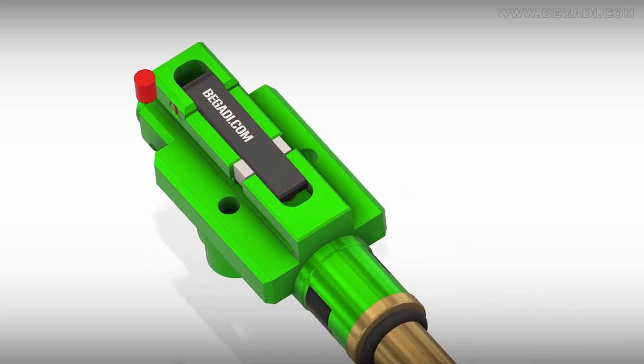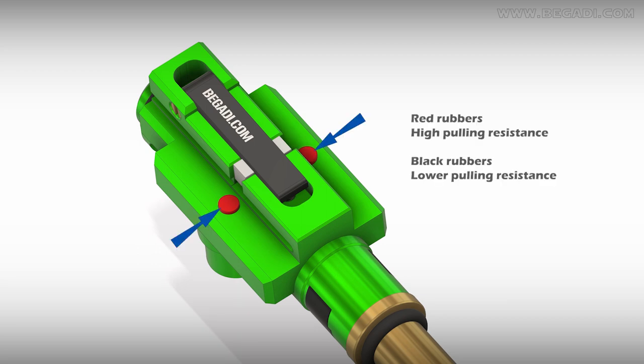The included rubbers with different hardness settings can be used to adjust the slider's resistance. Using red rubbers on both sides will make the slider grip firmer. If you find adjusting in this configuration too difficult, you can use the black rubbers.